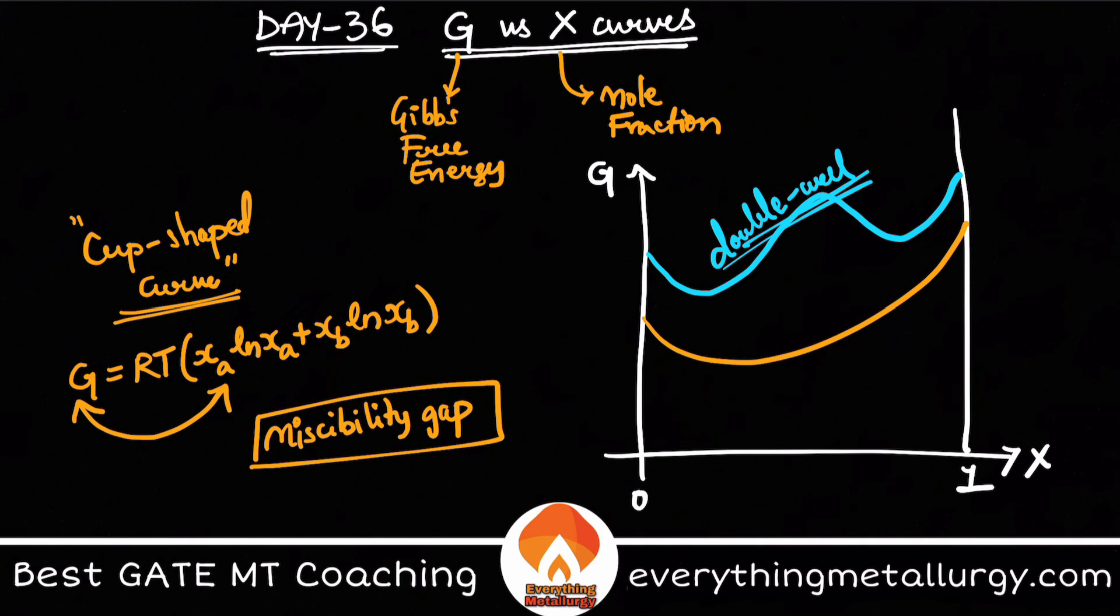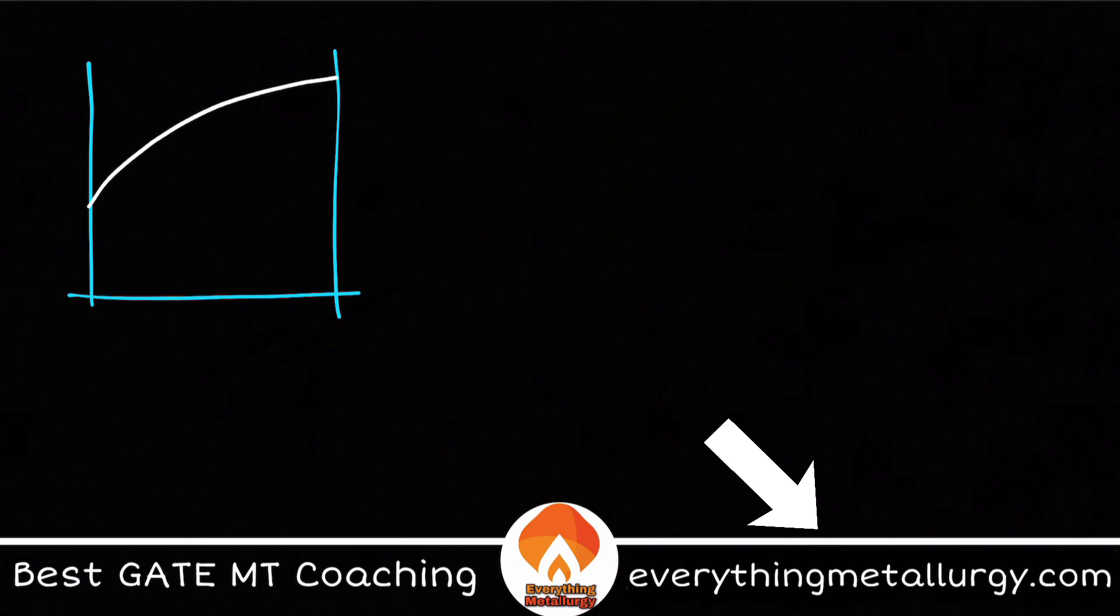Now how will I use this particular curve to explain the stability? So let me take an isomorphous system. What is an isomorphous system which has complete solubility? Something like this. So here I have liquid, solid, and liquid plus solid, which is a solid solution basically or two-phase region. So here I have two phases, liquid and a solid.